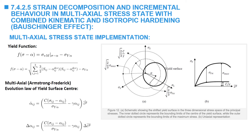The evolution of the center of the yield surface in 3D space is given by the 3D version of the Armstrong-Frederick law. In this equation, the increment of alpha_ij is related to the increment in the equivalent plastic strain using the constants c and gamma and the other stress components.